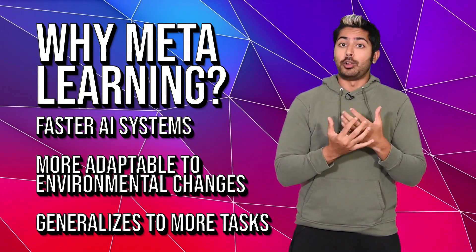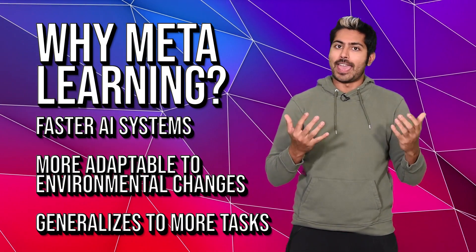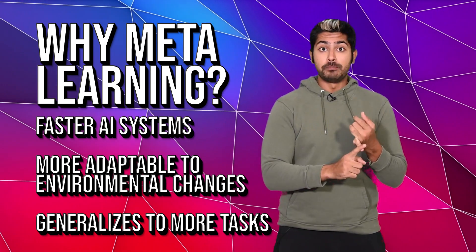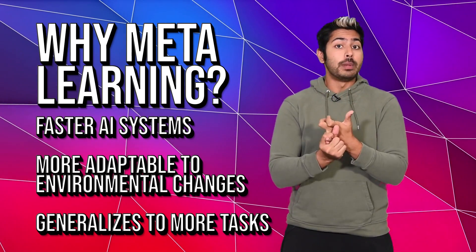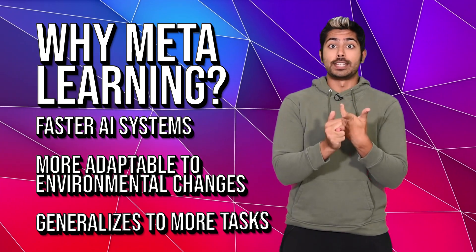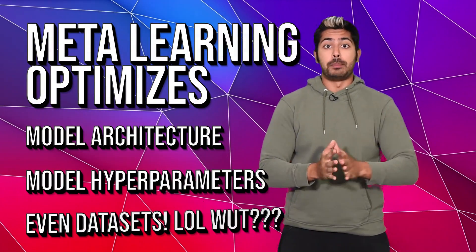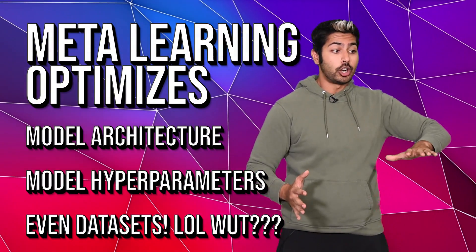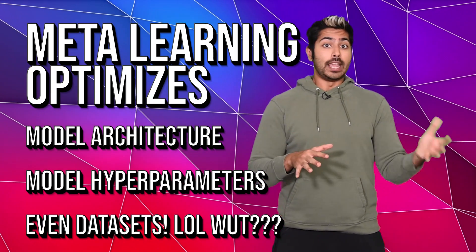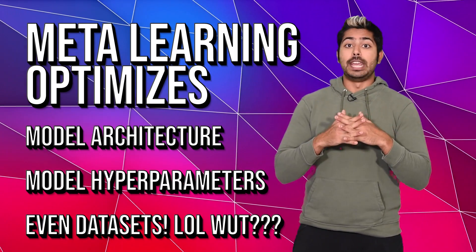and it's currently a very popular topic in AI. The reason being, meta-level AI algorithms generally make AI systems learn faster, adapt to changes in their environments in a more robust way, and generalize to more tasks. And they can be used to optimize a model's architecture, its parameters, the type of data set it uses, or some combination of all of them.